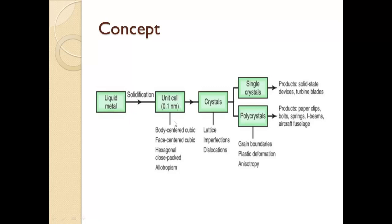This first unit cell is formed when the solidification process is complete. After that, a crystal structure is formed from the combination of different unit cells. That is called a crystal structure. Two types of crystal structures can be formed: single crystal and polycrystalline. Single crystal products include solid-state devices and turbine blades. Polycrystalline products include paper clips, bolts, springs, I-beams, and aircraft fuel edges.